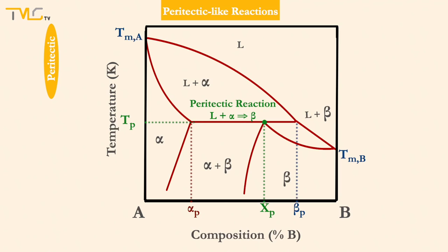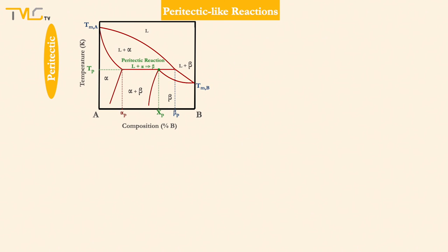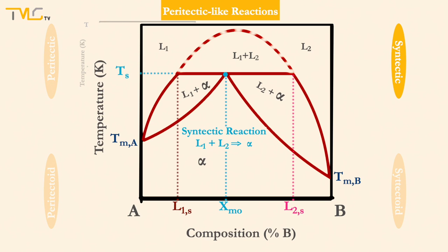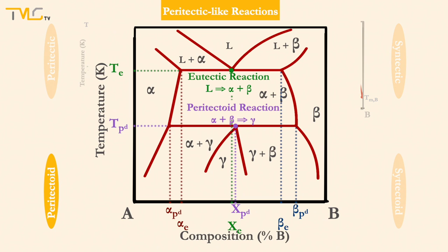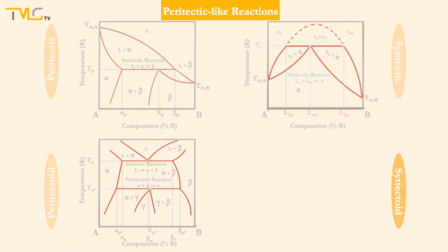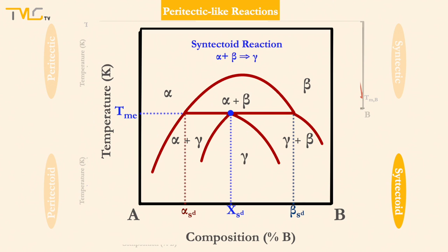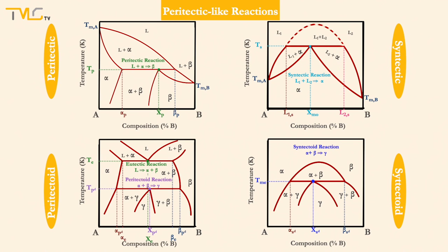Now let's take a look at some of the other peritectic-like reactions, such as syntectic, syntectoid, and peritectoid. In the syntectic reaction, two immiscible liquids form a solid phase. During a peritectoid reaction, two solid phases turn into another solid phase. Similarly, during syntectoid reactions, two solid phases transform into another solid phase. But there is a nuance between the peritectoid and syntectoid reactions: in a syntectoid reaction, the reactant solid phases can share the same lattice at sufficiently high temperatures.